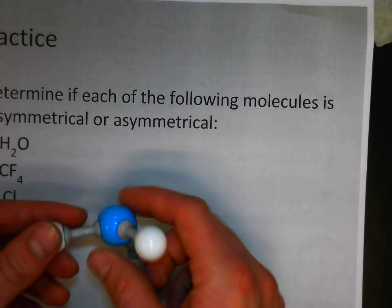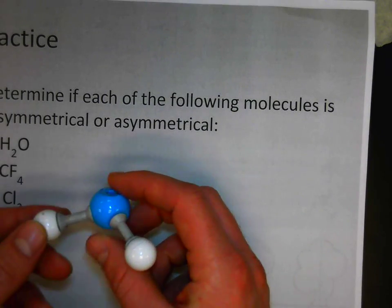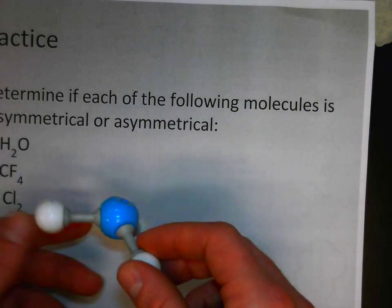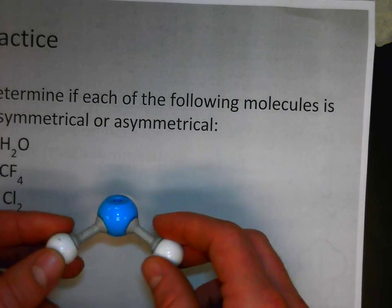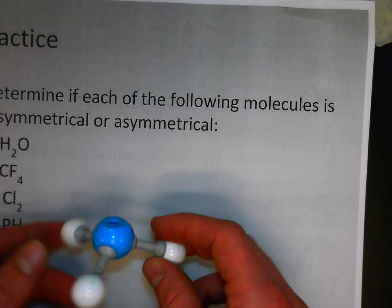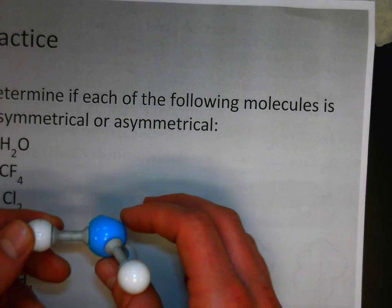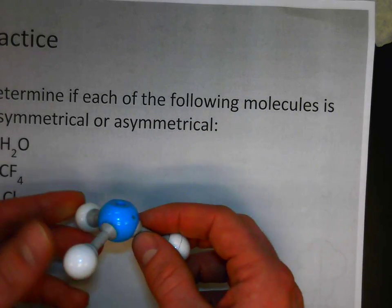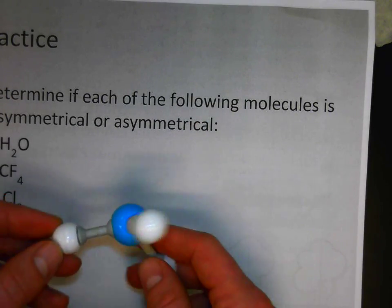PH3. I'm going to use the blue of nitrogen to represent the phosphorus since it has a similar bonding pattern. In this case, we have a trigonal pyramidal shape. This shape is not going to distribute the electrons evenly, and so therefore we would consider this one to be asymmetrical.